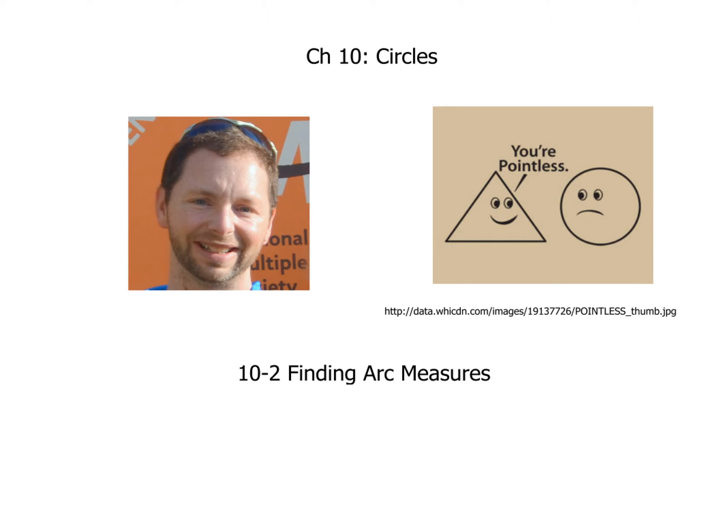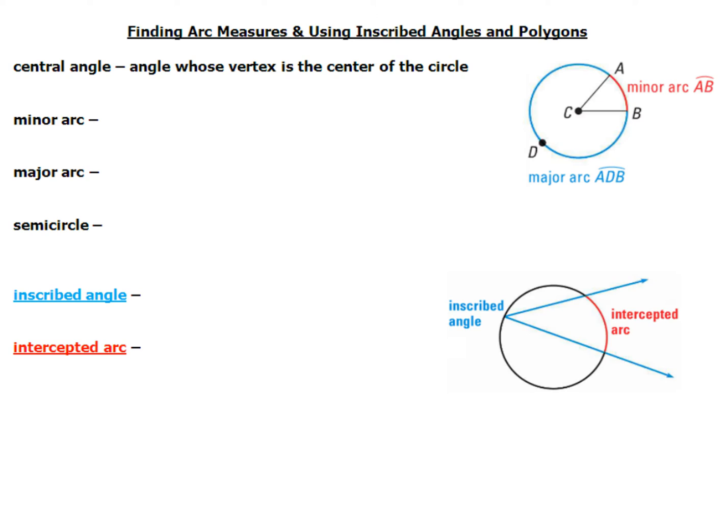Now we're going to take a look at a whole bunch of vocabulary that has to do with segments and arcs of a circle. The first thing we're going to talk about is a central angle. The central angle is an angle whose vertex is at the center of a circle. We'll get into more about the central angle and its measurement as it relates to the arc that it intersects.